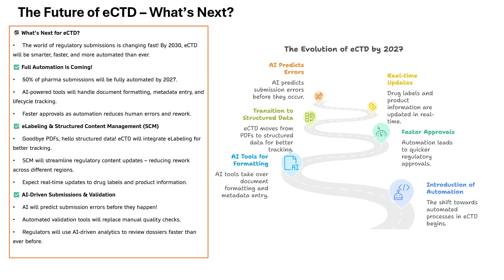The future of ECTD is about intelligent, automated and AI-driven submissions. By 2030, at least half of pharma submissions will be fully automated — imagine AI formatting your documents, assigning metadata and even predicting validation errors before submission. One of the biggest changes is e-labeling and structured content management: instead of static PDFs, regulators will require structured real-time updates for product labels, meaning faster updates and a single source of truth across global agencies. AI-powered tools will eliminate manual validation, instantly checking lifecycle operators, metadata and hyperlinks, while regulatory agencies will use AI-driven analytics to review dossiers in record time.